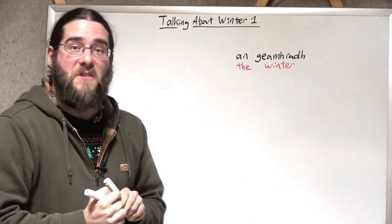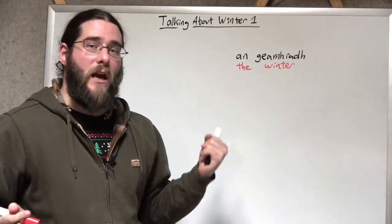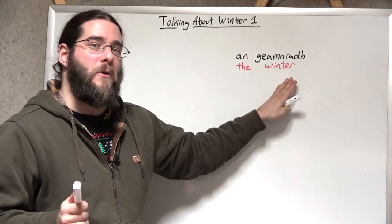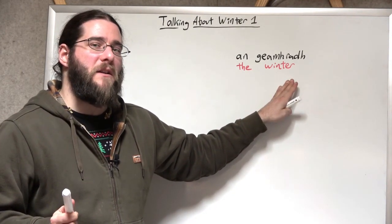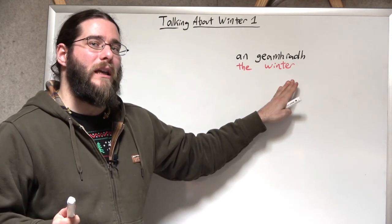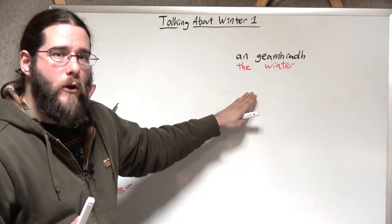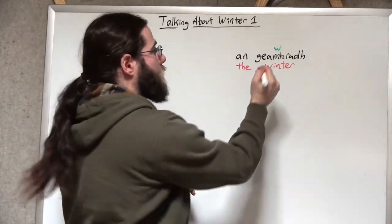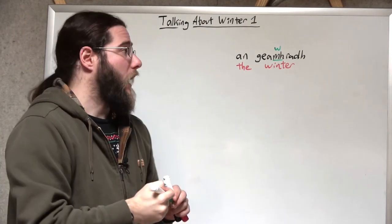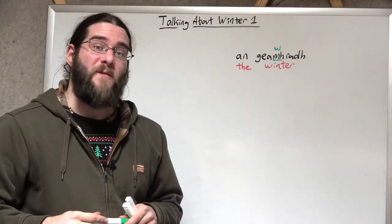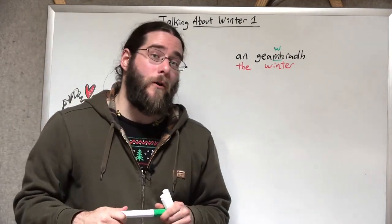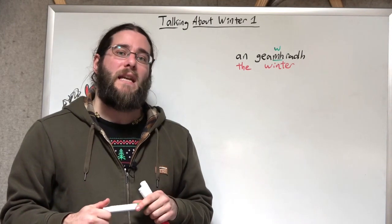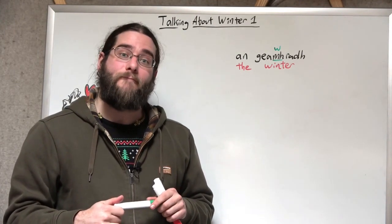An gyaurig — the winter. It's got a kind of nice sound to it. You hear a certain, maybe unexpected, sound in the middle — there's a W sound right there. It's the 'mh.' When you have a longer Gaelic word with 'mh' in the middle, oftentimes it'll sound like a W. Remember, Gaelic doesn't have letters like W, so it makes them through letter combinations like 'mh.'